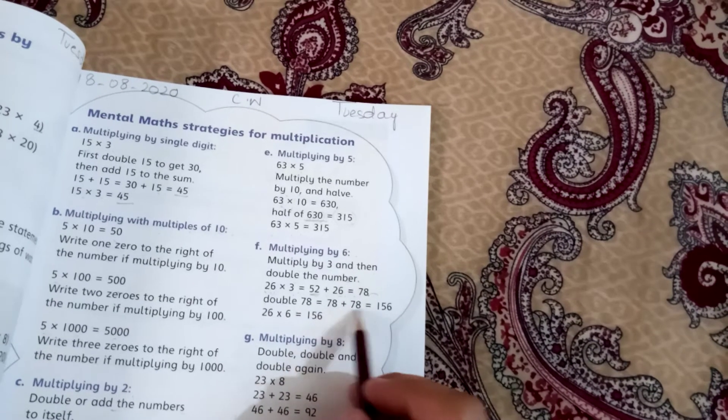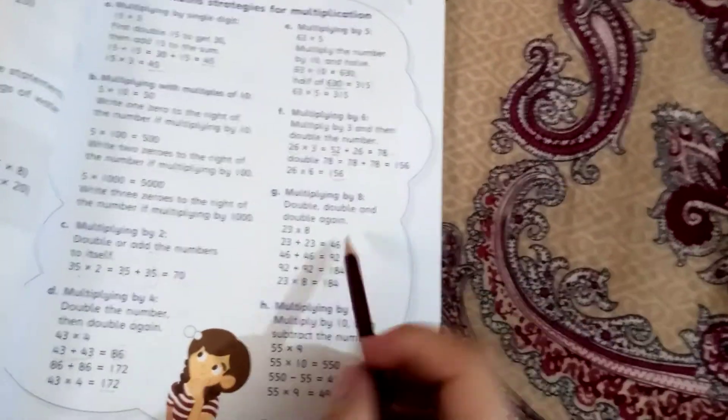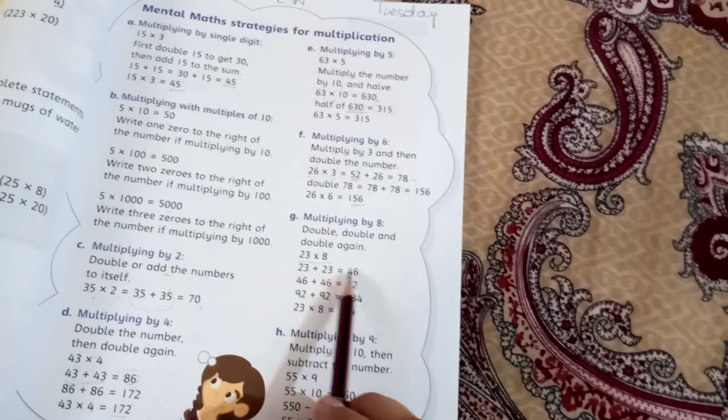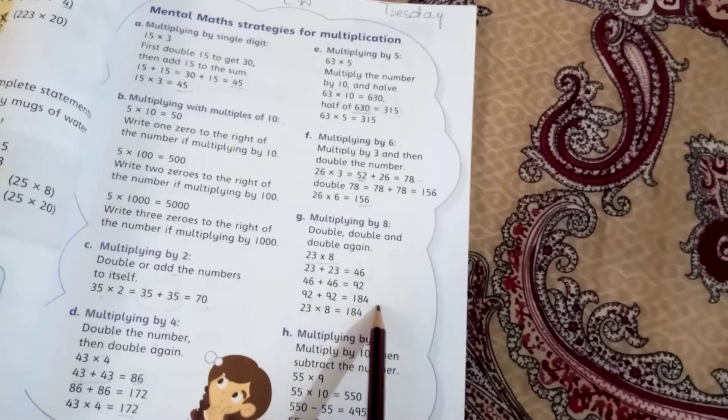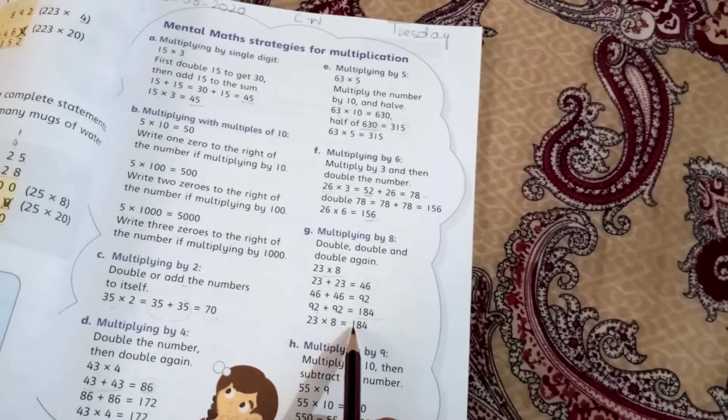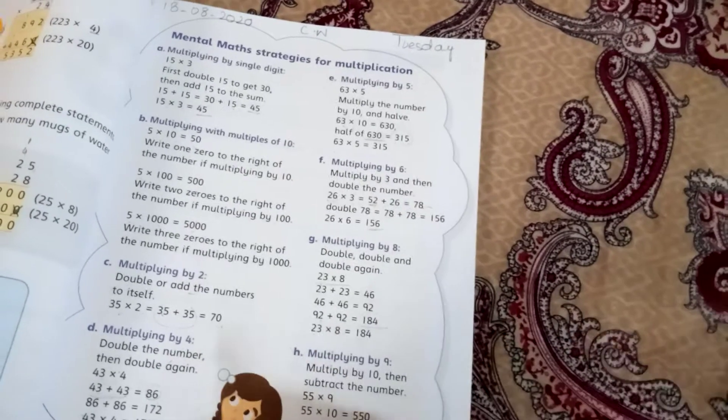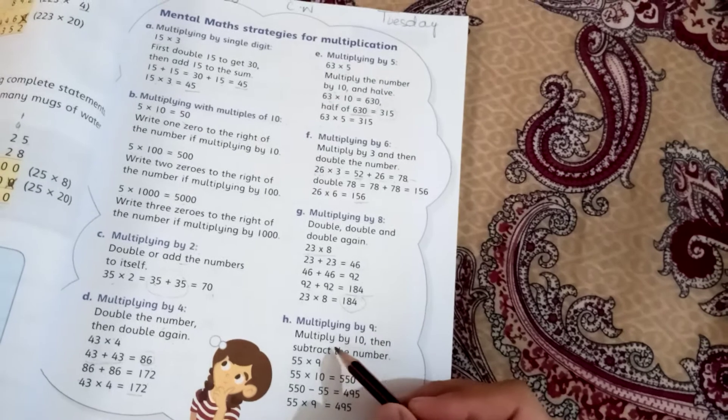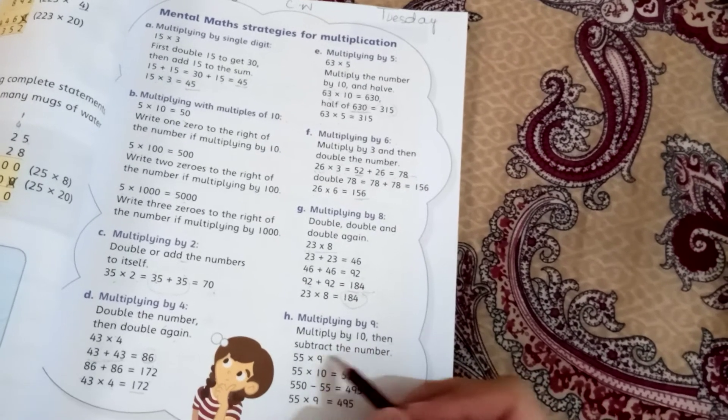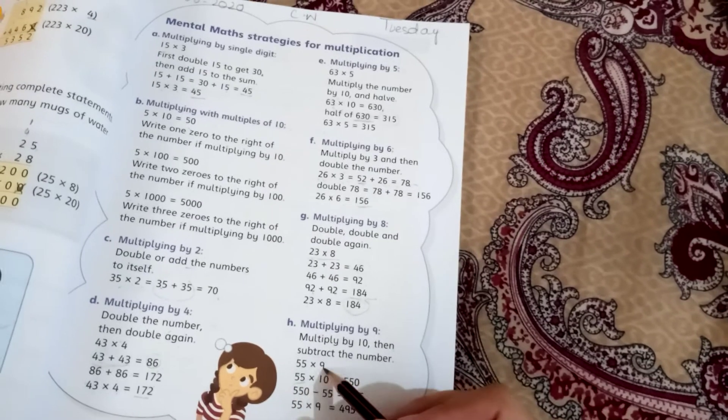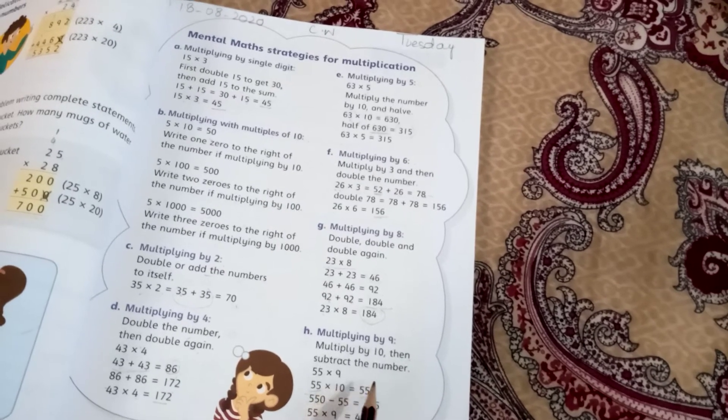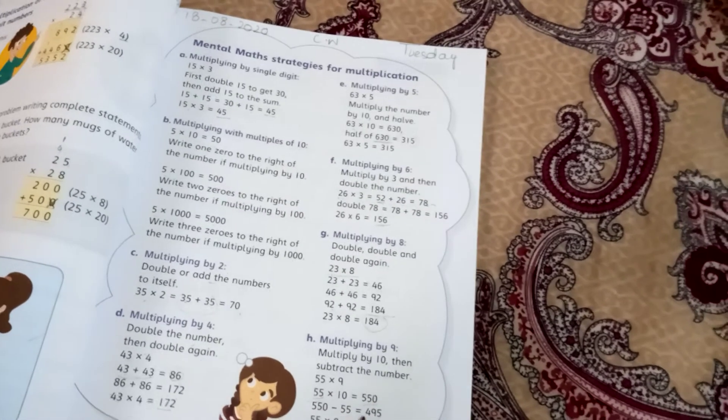Multiplying by 8: double, double, double again. 23 times 8: 46, 92, 184. Multiplying by 9: multiply by 10 then subtract the number. 55 times 9 - 55 times 10 is 550, minus 55 is 495.